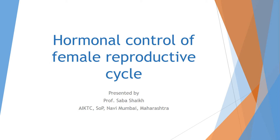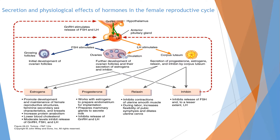Assalamu alaikum. I am Professor Sabha Sheikh from Anjuman Salaam Kalsikhar Technical Campus, Nabi Mumbai. Today we are going to discuss hormonal control of the female reproductive cycle. This is a very good diagram taken from the book Tortora. In this diagram, you can easily understand the effect of different hormones on the female reproductive cycle.